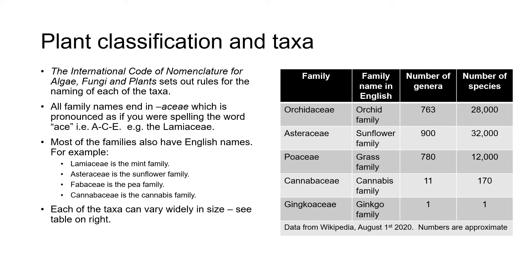In this class we're mainly concerned only with taxa lower than family. All family names end in A-C-E, pronounced as if you were spelling out the word 'ace.' So we have the Lamiaceae. Most of the families also have English names. For example, the Lamiaceae is the mint family, Asteraceae is the sunflower family, Fabaceae is the pea family, and Cannabaceae is the cannabis family.